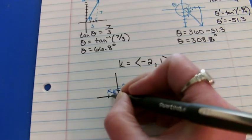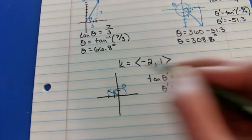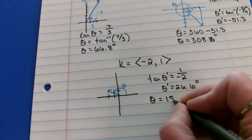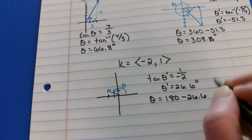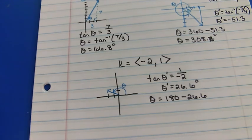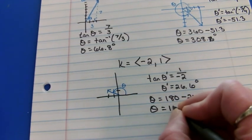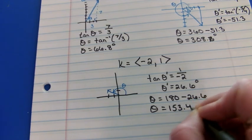Well, that's how far away I am from that x-axis. And that would be 180 degrees. So, it's 153.4 degrees.